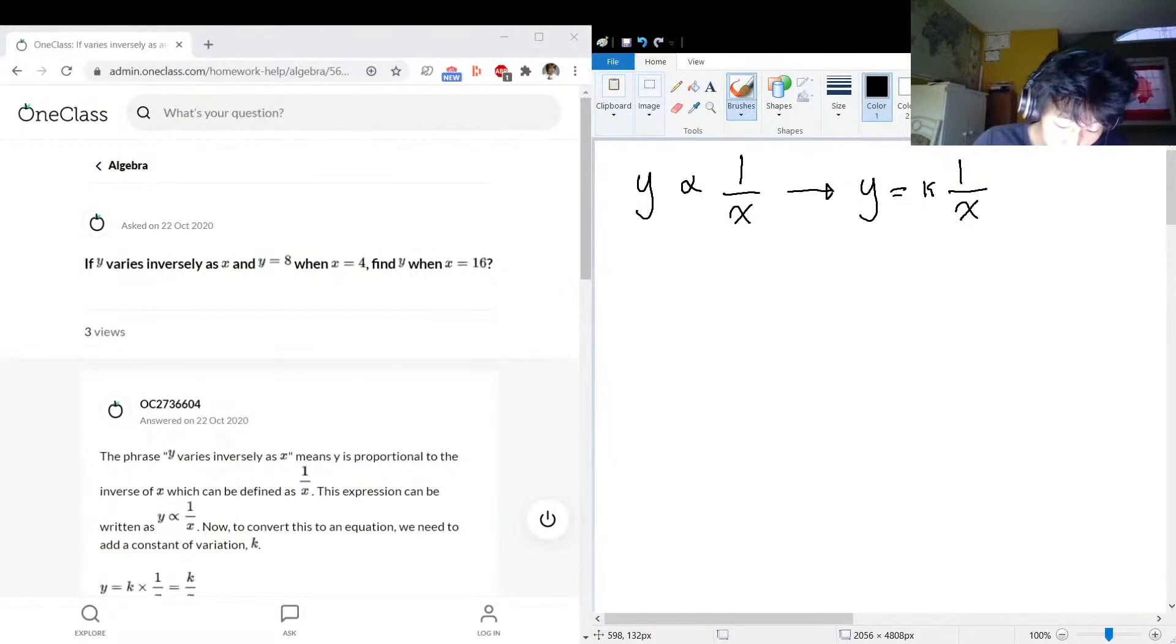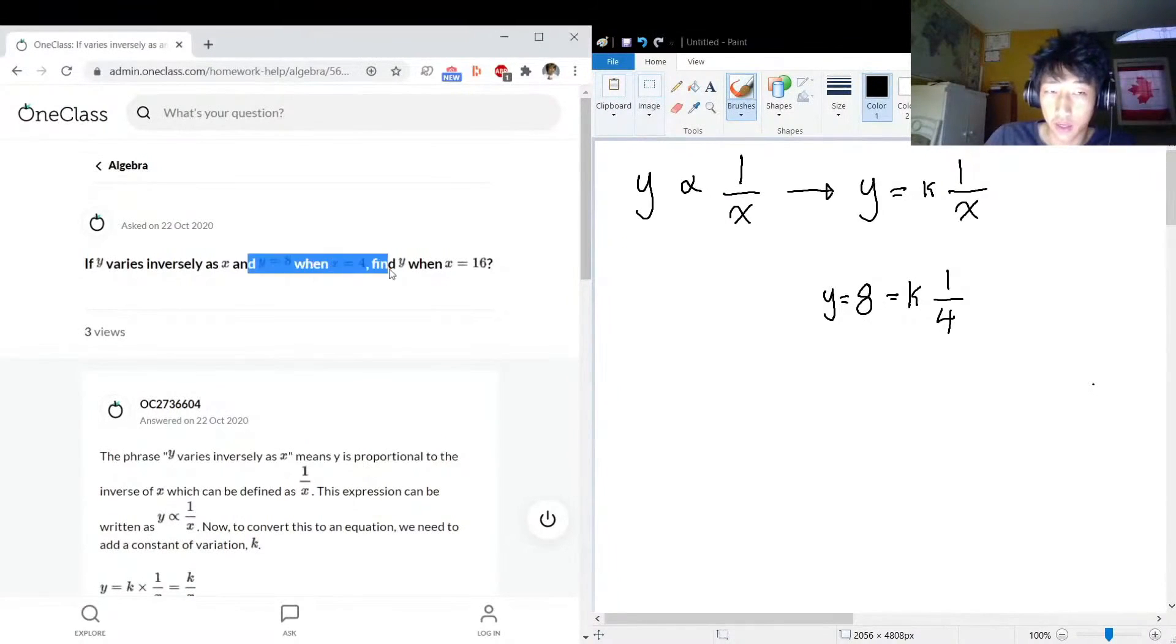We also know that y is equal to 8, which is equal to k times 1 over 4. This is when x is equal to 4. That's what we're getting over here. Y equals 8 when x equals 4, so this should help us find what k is, what the constant of their inverse relationship is.